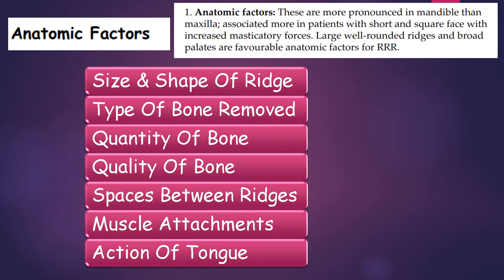The various anatomic factors include: size and shape of the ridge, type of bone removed, quantity and quality of the bone, spaces between the ridges, muscle attachments, and action of the tongue.